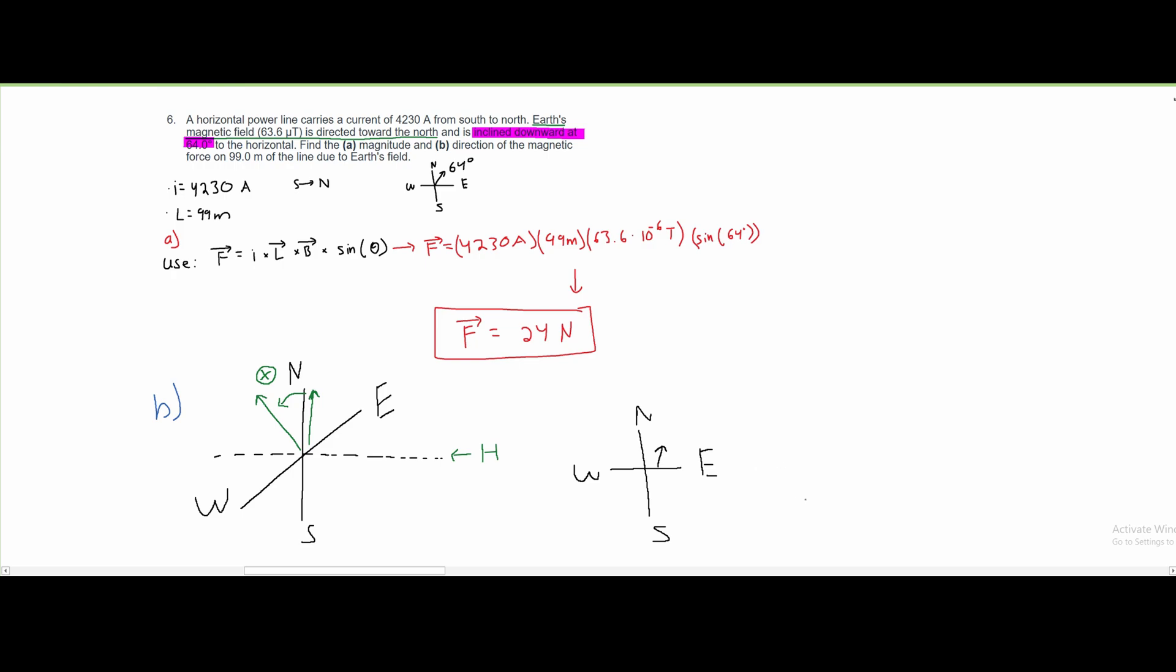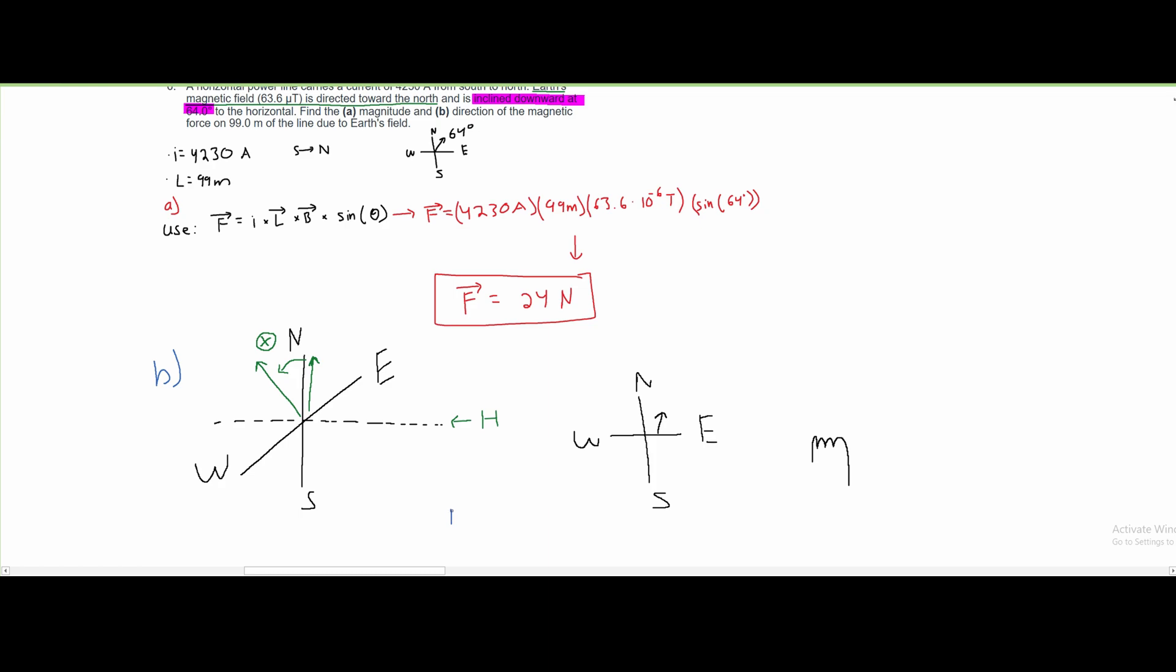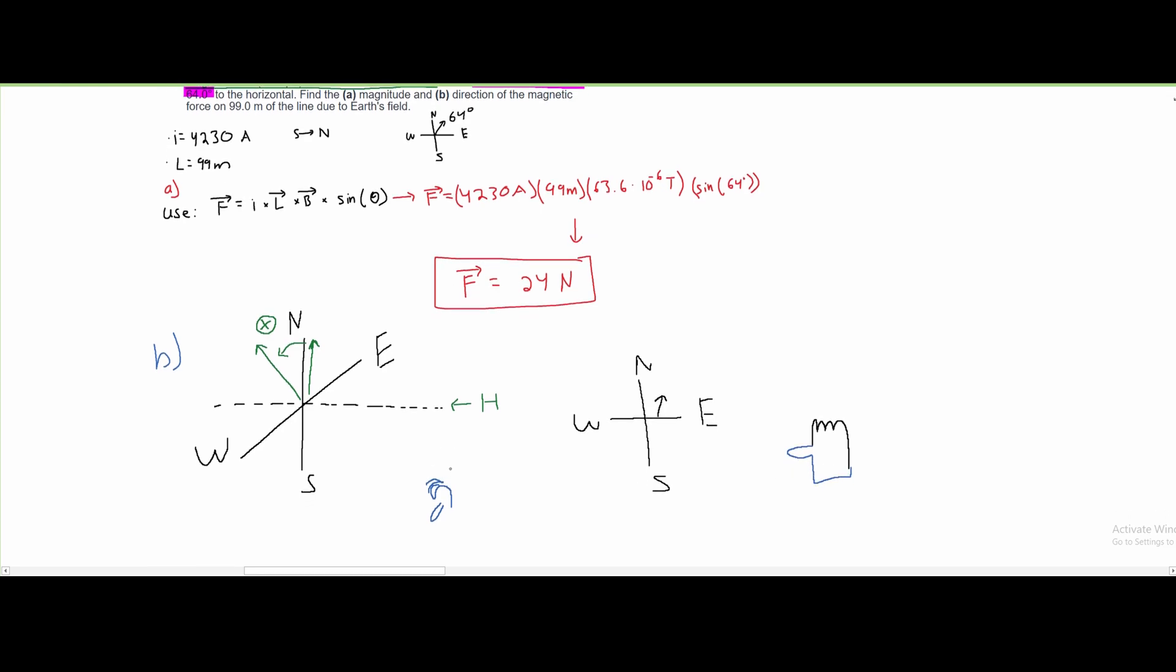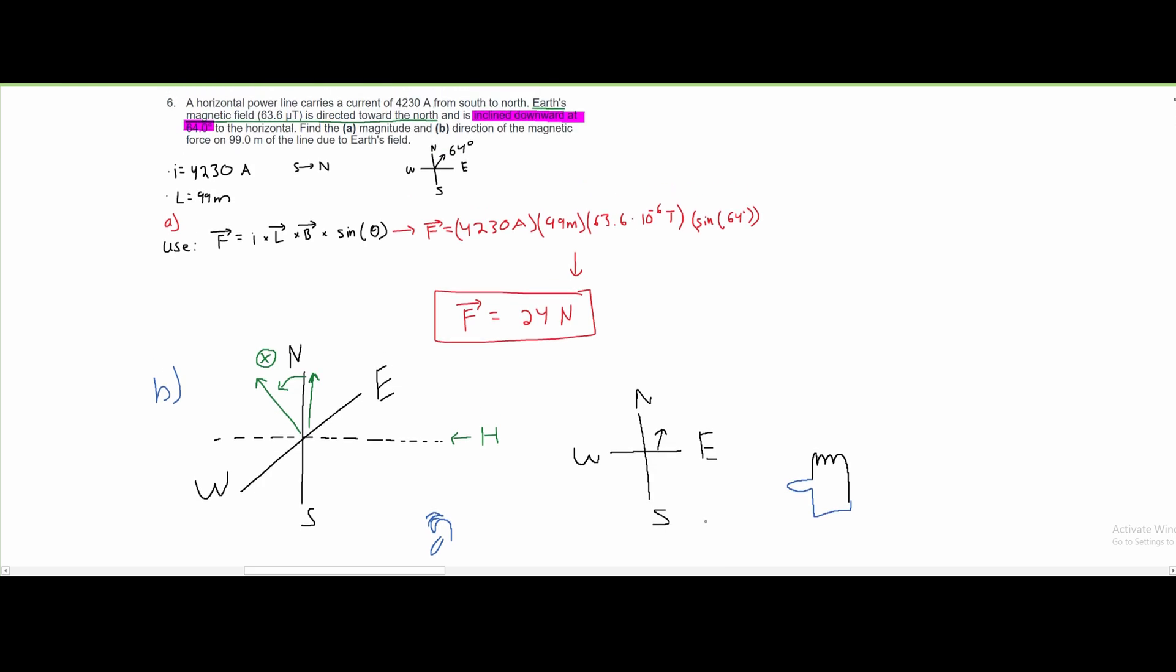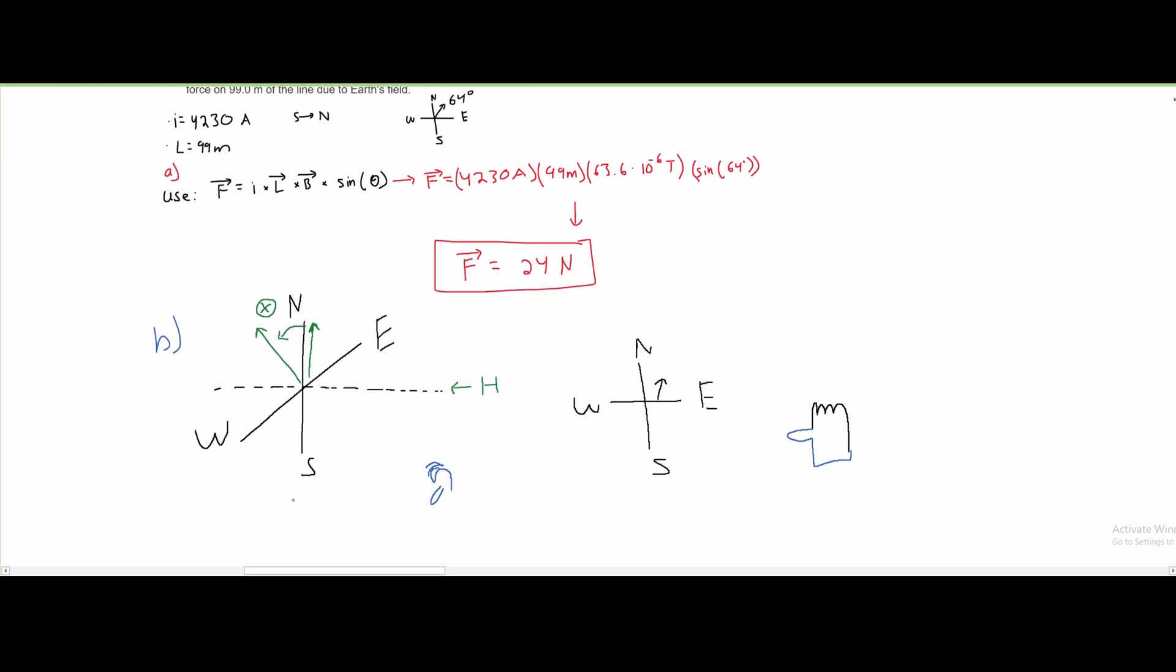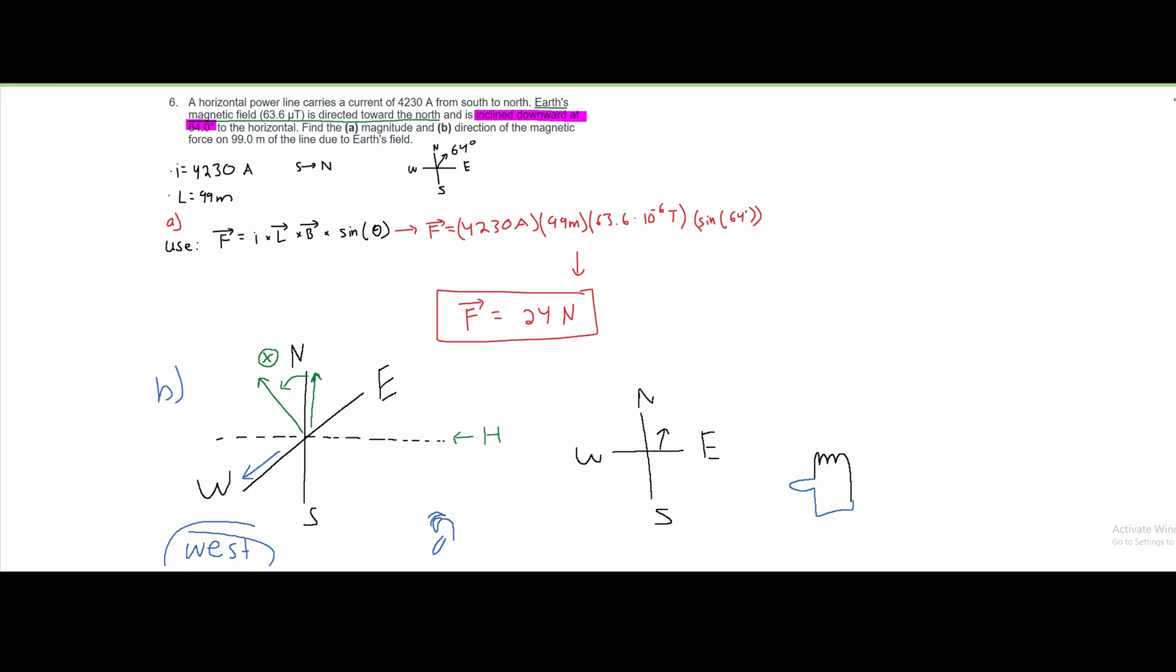If we use our right hand rule, we can see that our fingers are going to be curling into the page. Just like they are here. If we draw our right hand like this, we can see that our fingers are going to be curling into the page. Curling in like this. What this means is that our thumb is going to be pointed this way. And if our thumb is pointed that way, like this, that means it's going to be pointed in the west direction. So for part B, the direction is going to be to the west.